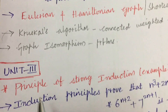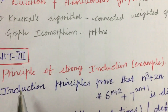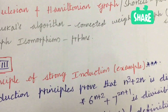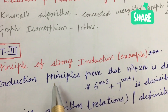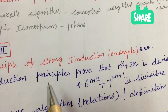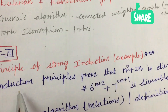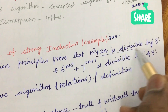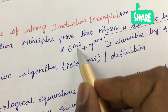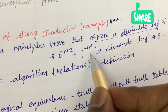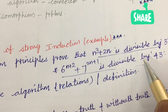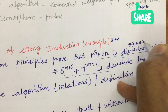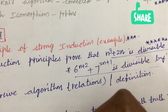Moving to Unit 3, sure-shot questions include the principle of strong induction along with examples. Do not forget to work out from Unit 3: prove that n³ + 2n is divisible by 3, and prove that 6^(n+2) + 7^(2n+1) is divisible by 43. Problems of this type are sure-shot and very, very important — make sure to work out these problems.